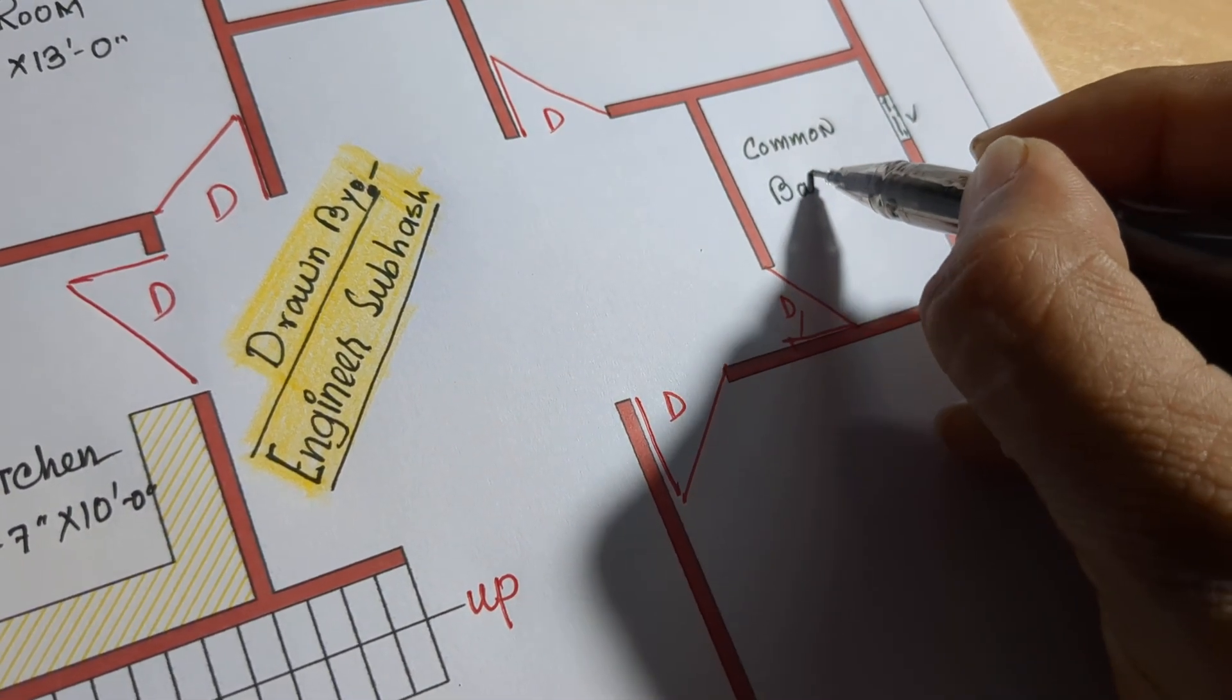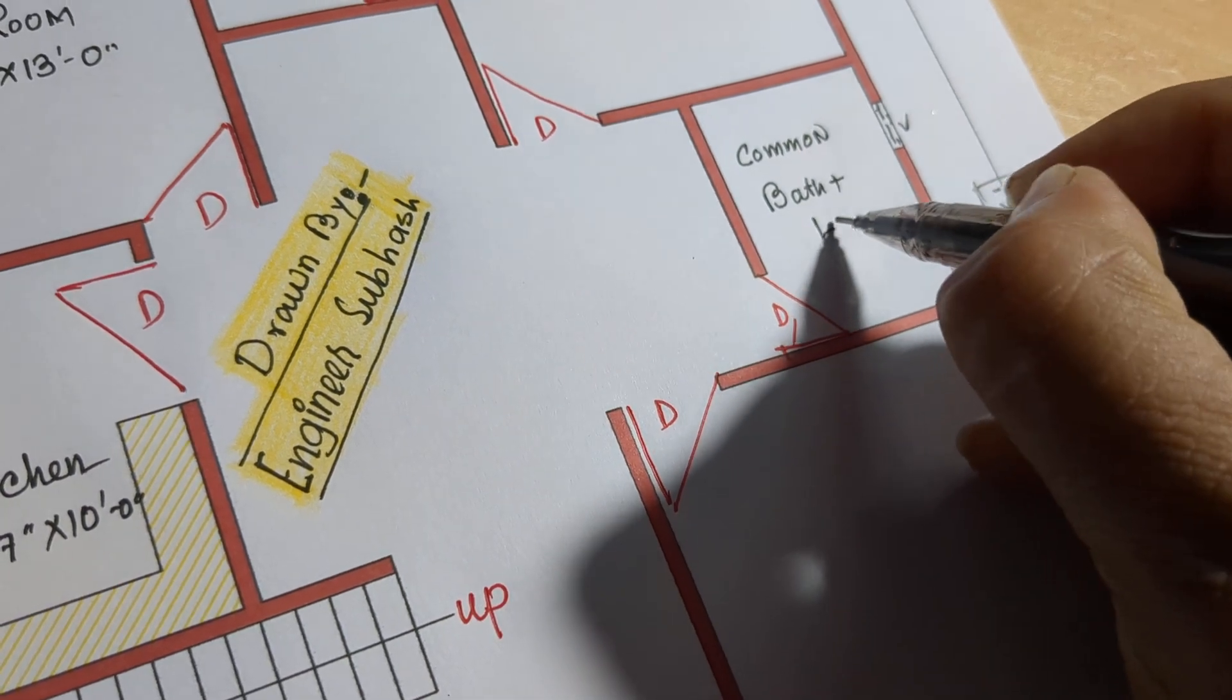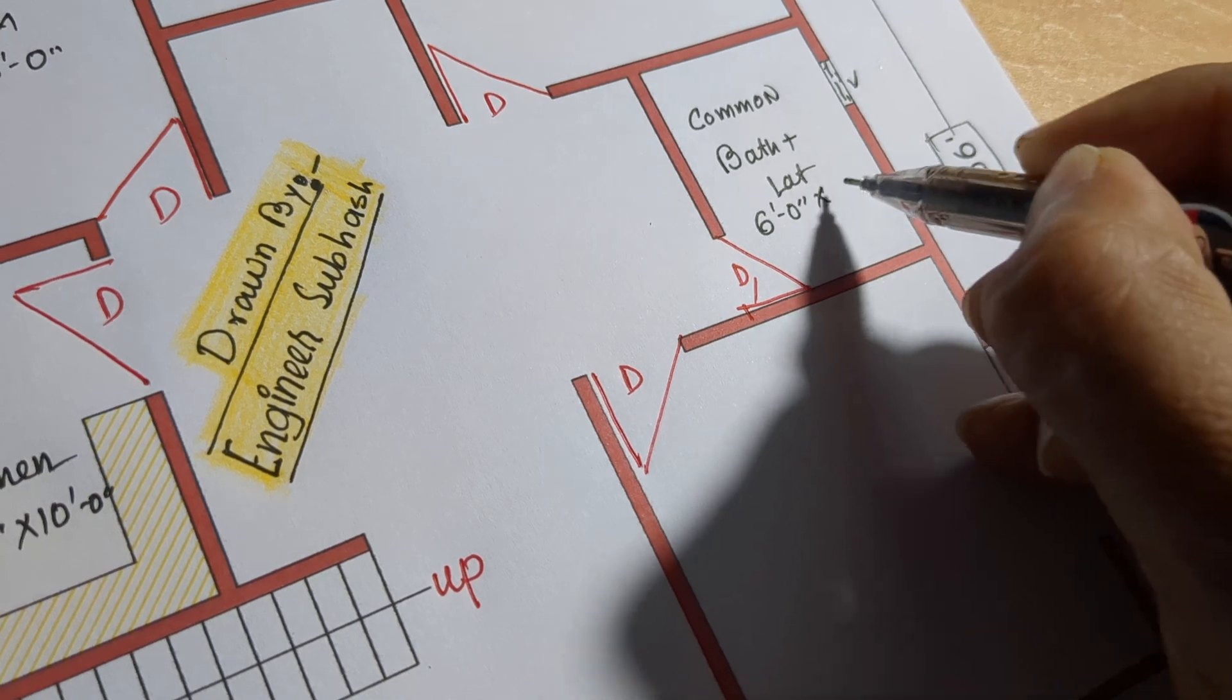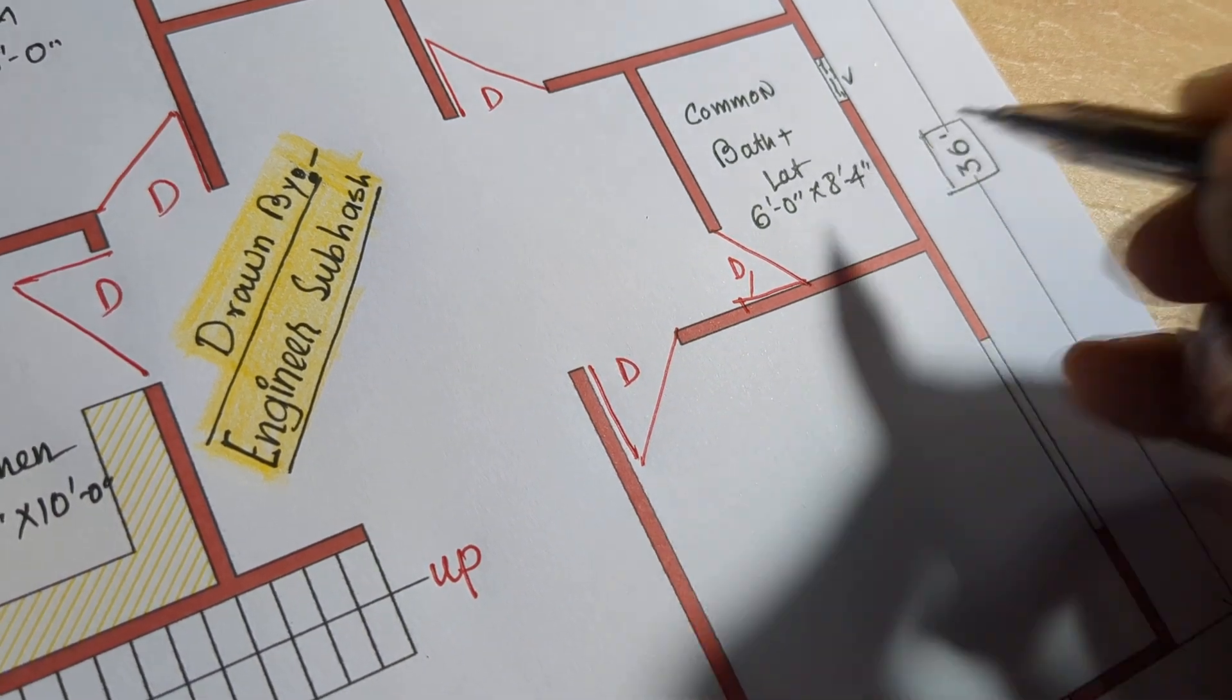Common bath plus latrine: 6 feet 0 inch by 8 feet 4 inch.